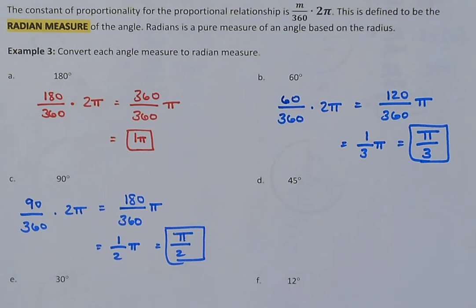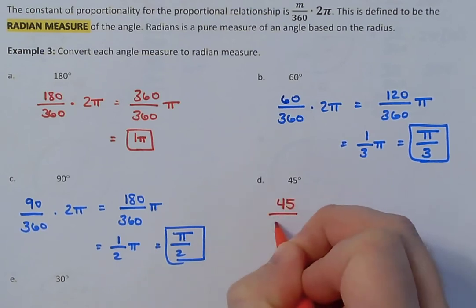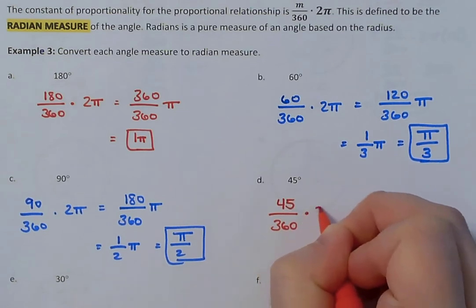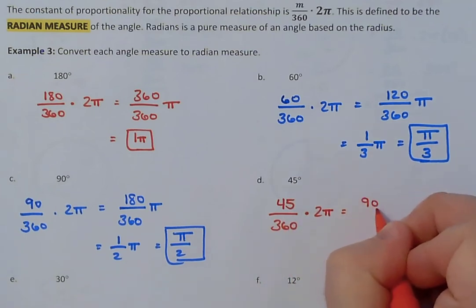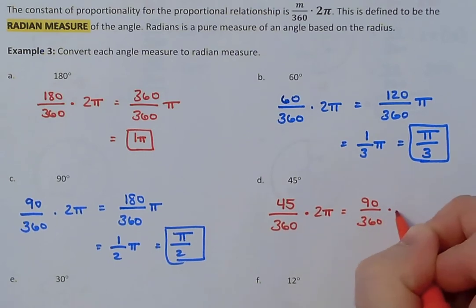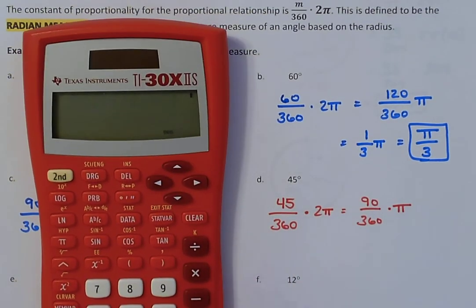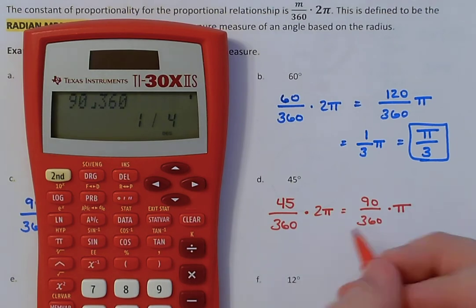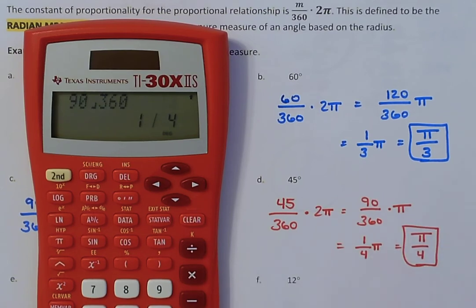For part d, 45 degrees: 45/360 × 2π. Multiplying 2 into 45 gives 90, so it's 90/360 × π. Simplifying 90/360 gives one fourth, so the answer is π/4. The radian measure of 45 degrees is π/4. That is how you go through and convert degrees to radians.